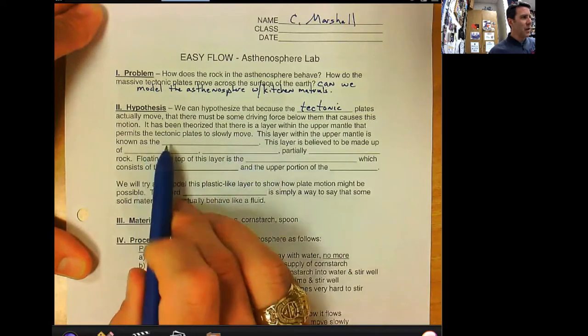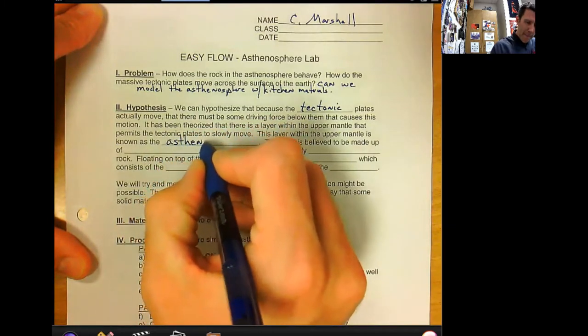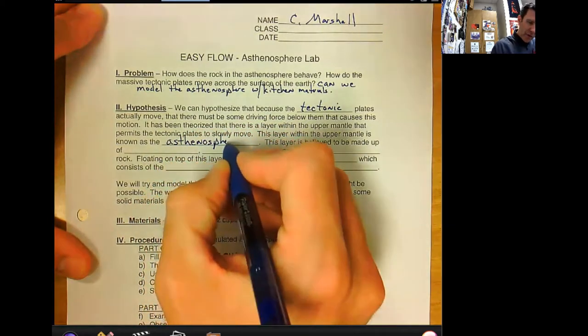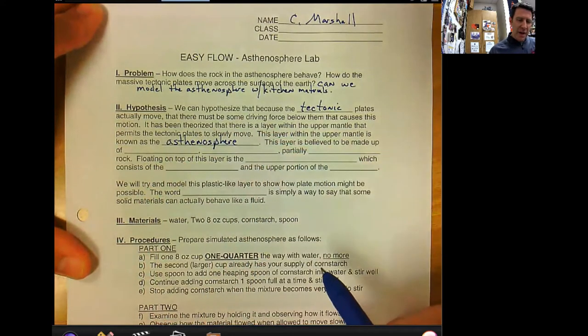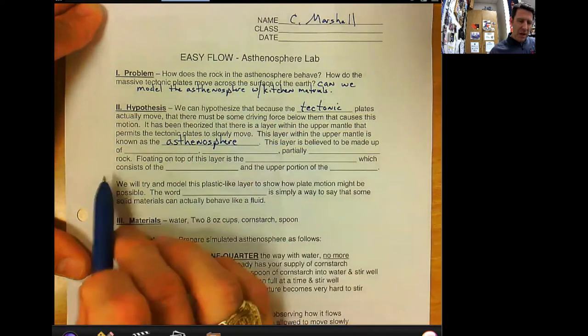This layer within the upper mantle is known as the, starts with an A, asthenosphere. This layer is believed to be made up of blank, blank, and partially blankety blank rock.